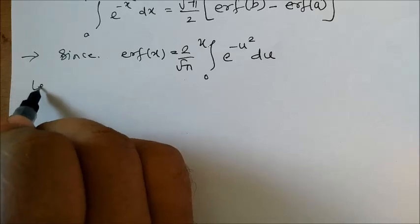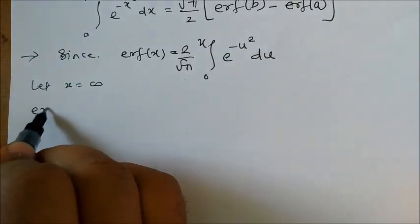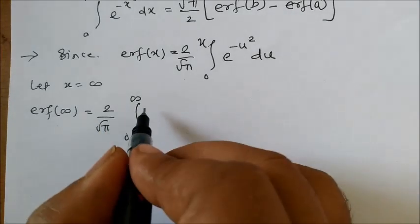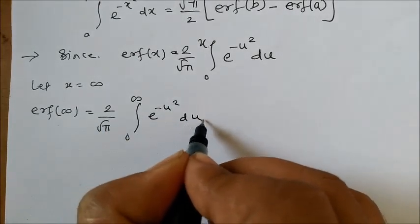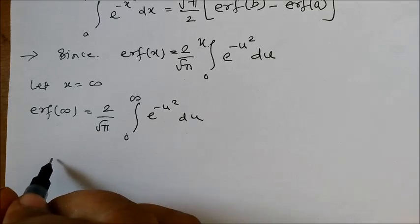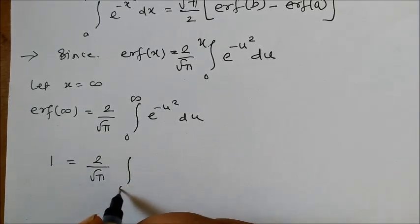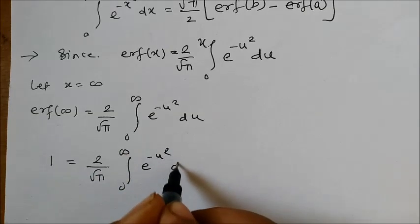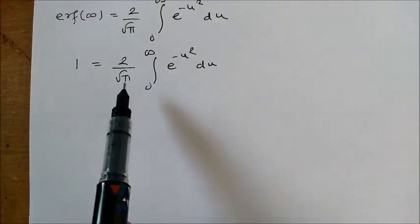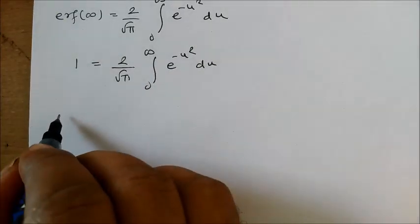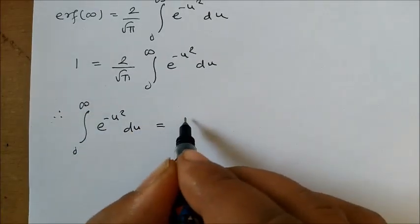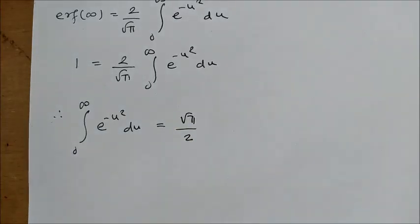Now if I put x equal to infinity, I get erf(∞) which equals 2 by root pi, integral 0 to infinity, e to the power minus u squared du. We know that erf(∞) is always equal to 1. So 1 equals 2 by root pi times that integral. Therefore, integral from 0 to infinity of e to the power minus u squared du equals root pi by 2.